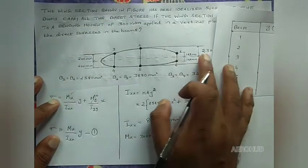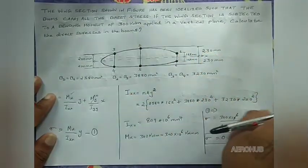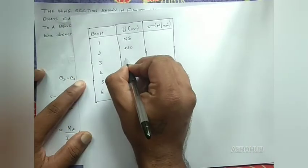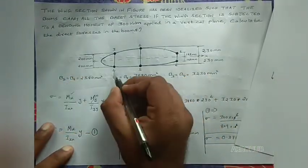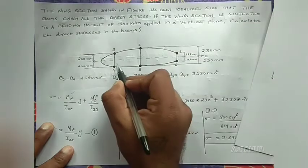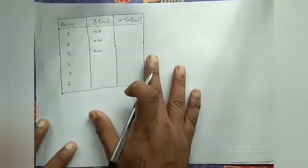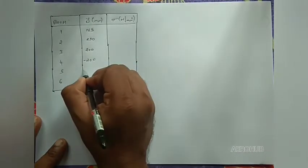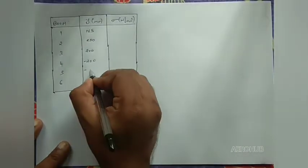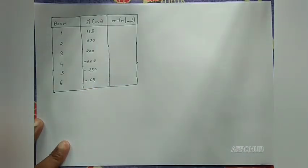Boom 1 is at 165 mm from the horizontal axis, boom 2 is at 230 mm, and boom 3 is at 200 mm. Booms 4, 5, and 6 are below the horizontal axis of symmetry, so their y values are negative: boom 4 is at −200 mm, boom 5 is at −230 mm, and boom 6 is at −165 mm.